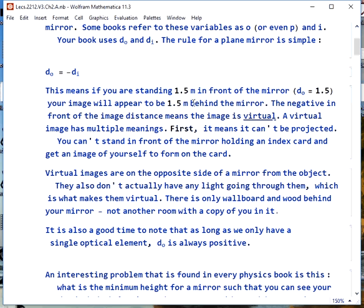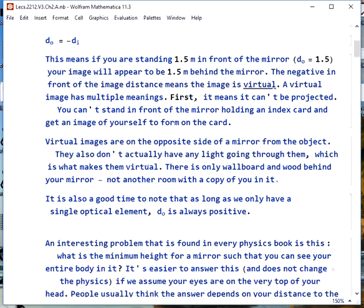For a mirror, it means that the image is on the opposite side of the mirror from the object. When you're standing looking at the bathroom mirror, there is nothing behind the mirror except wallboard and wood. There's not any light coming from that. That's what also makes it a virtual mirror. Finally, as long as we only have a single optical element, DO will always be positive.